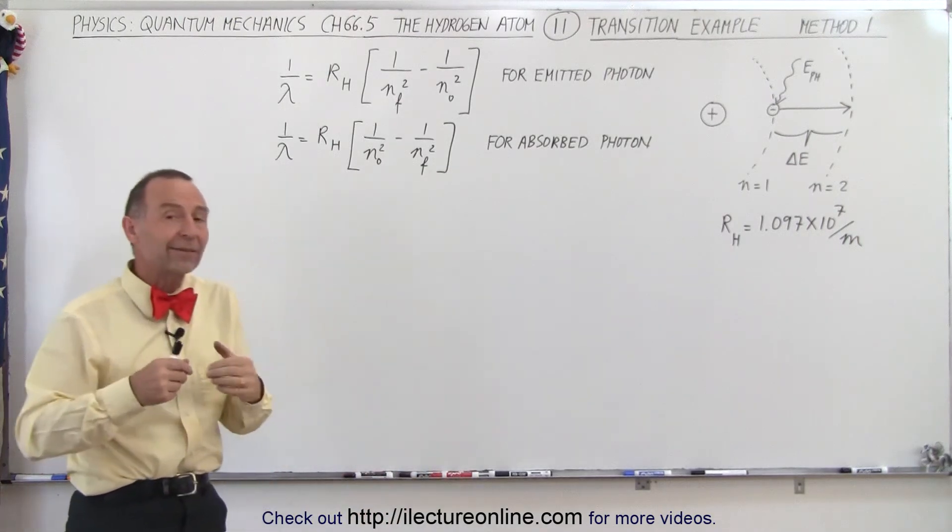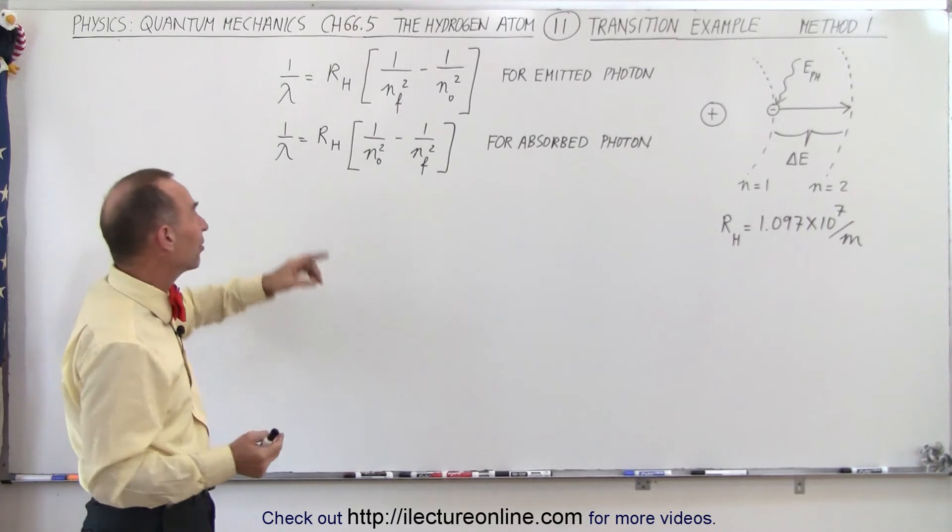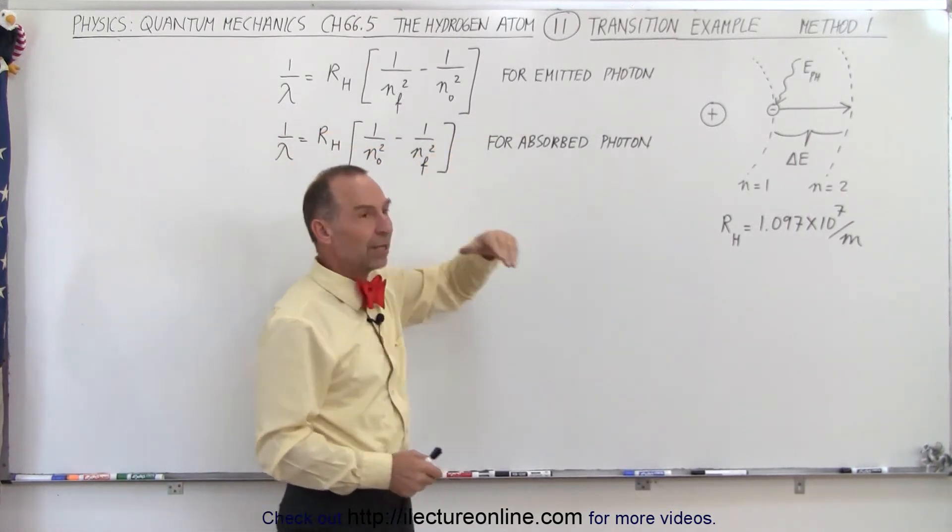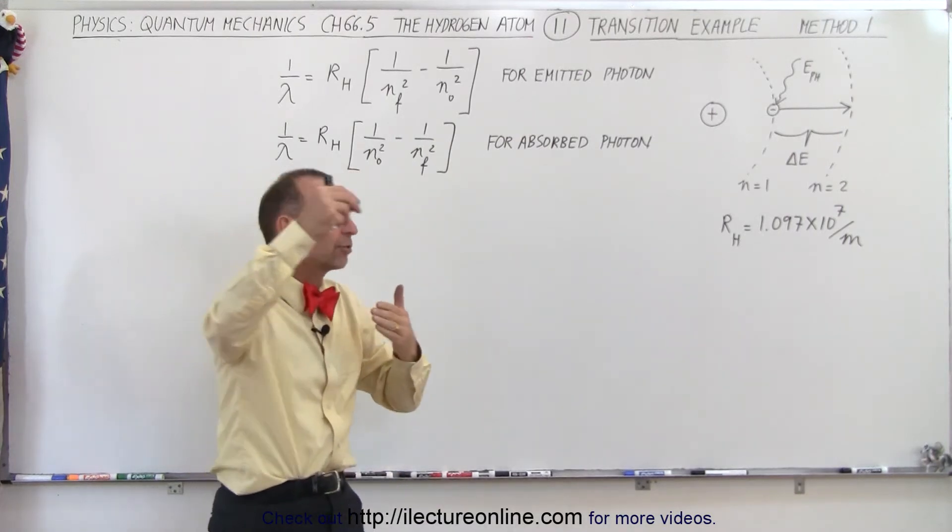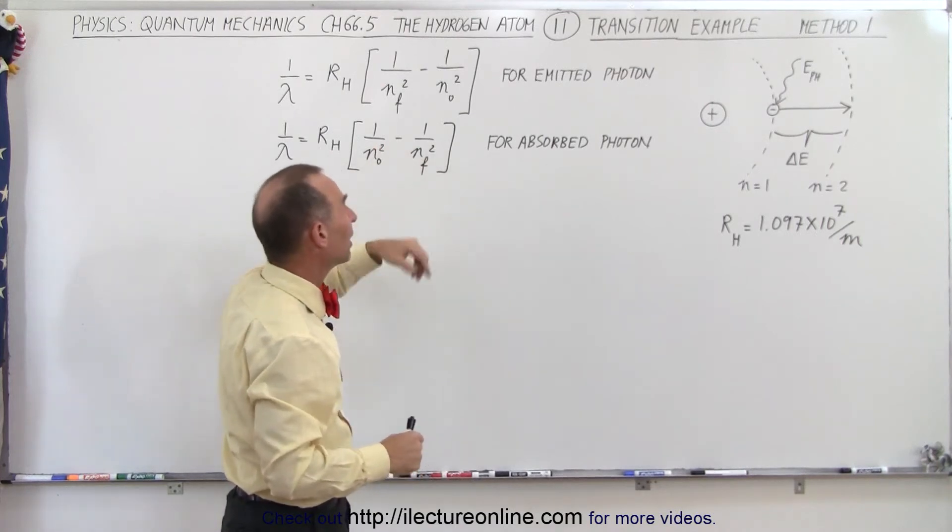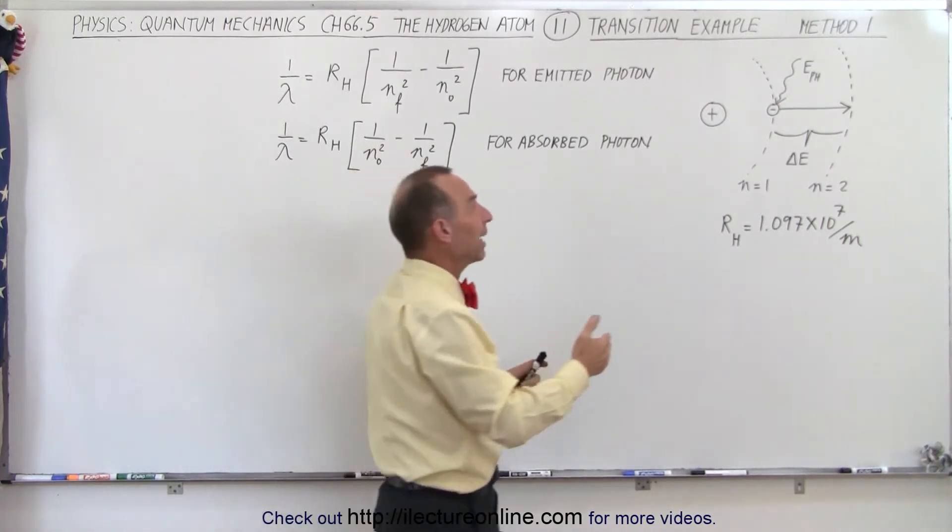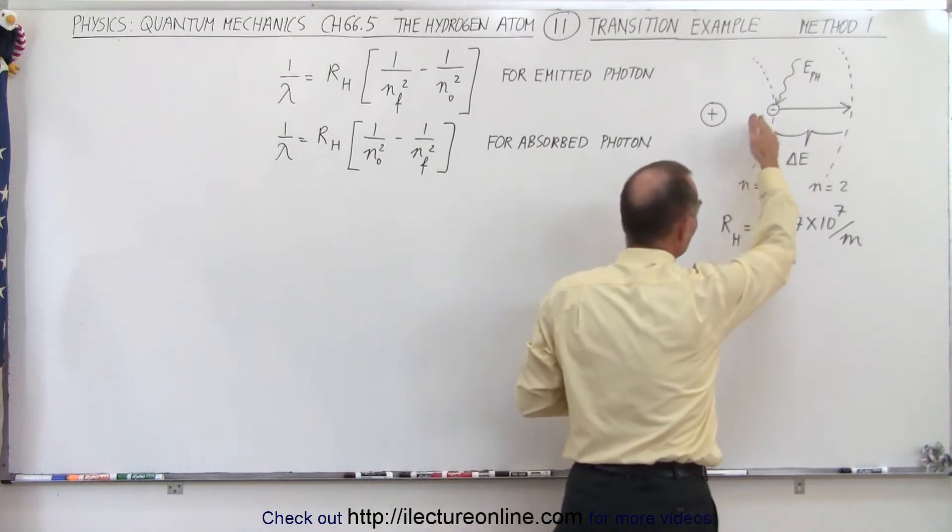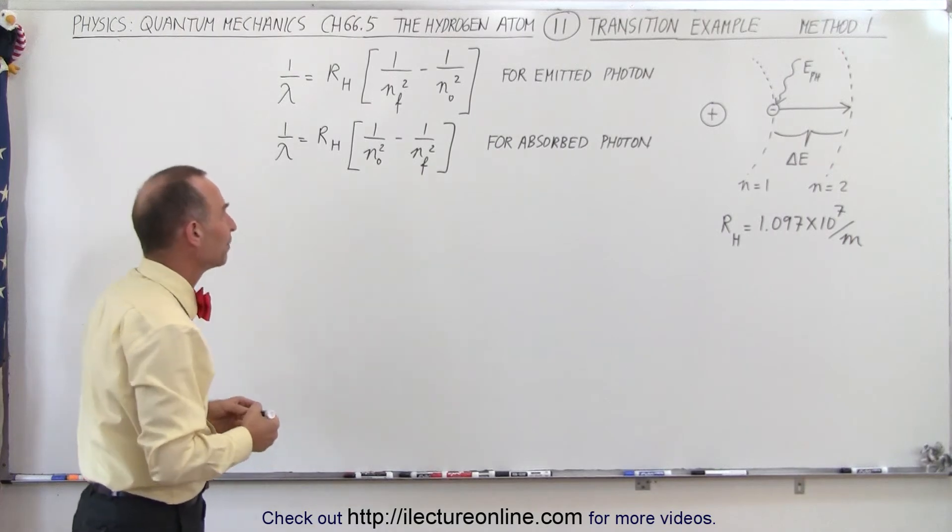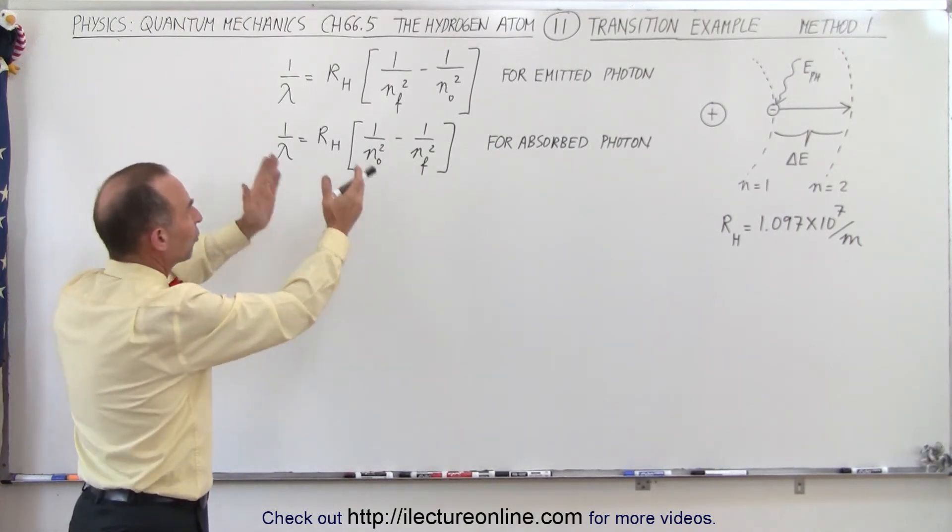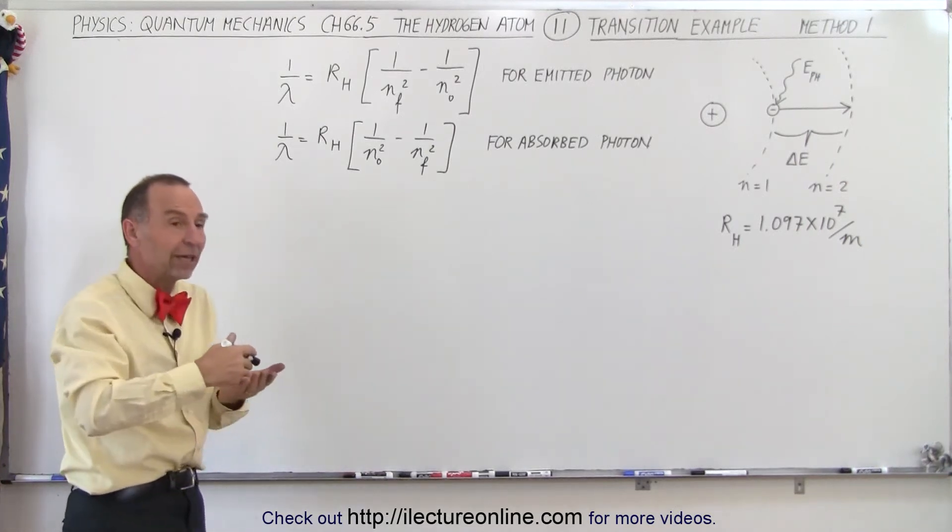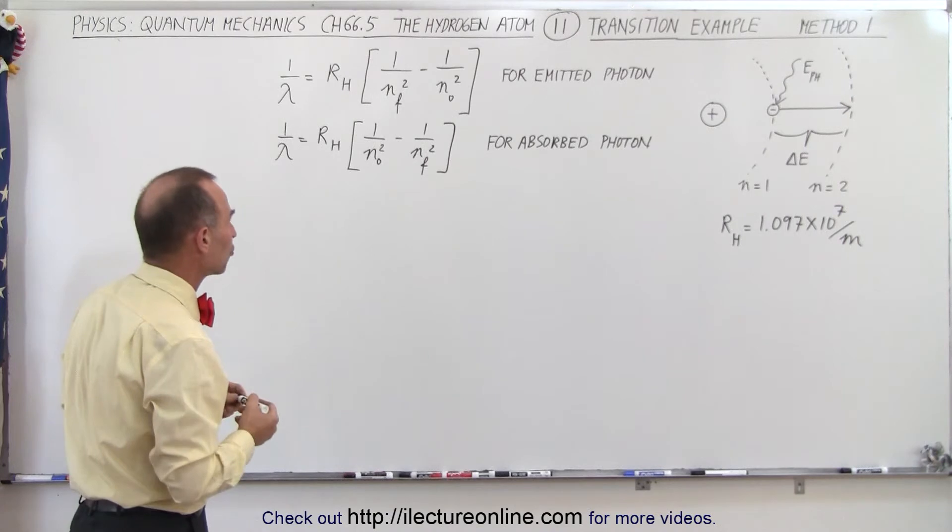And so here we realize that to keep the sign always positive for the wavelength, we can use the equation like this when a photon is emitted. Emitted means that an electron falls from a higher orbit down to a lower orbit, and we have to reverse the order of these if we're dealing with an absorbed photon, in the case where the electron jumps from a lower orbit to a higher orbit. We just do that so that the sign remains positive. Definitely what we want is the absolute value of the energy difference, and we realize that there's energy released and energy absorbed depending upon which way the electron travels.